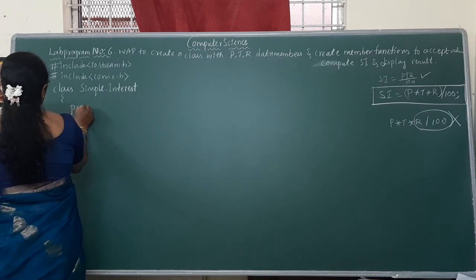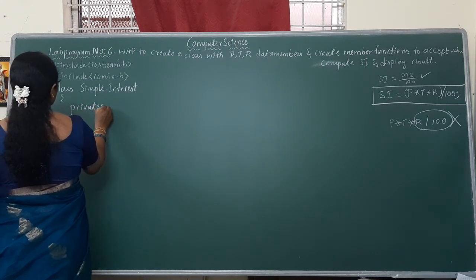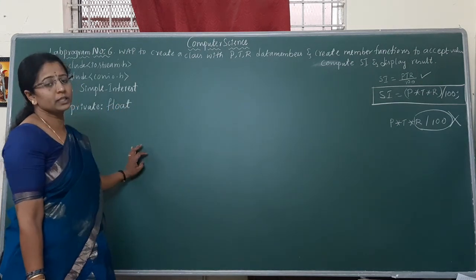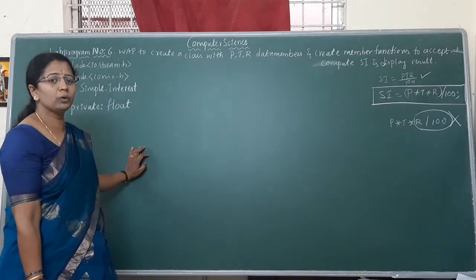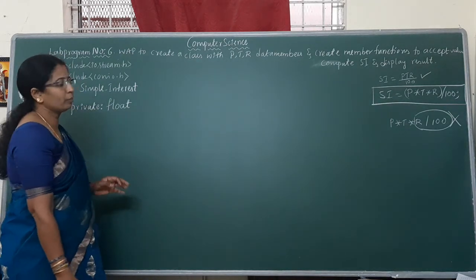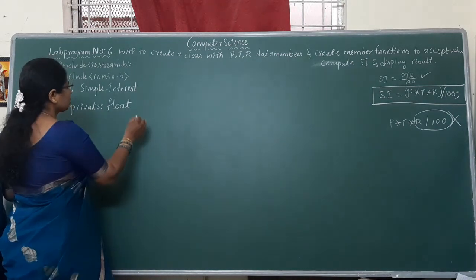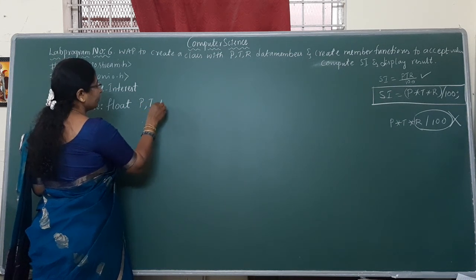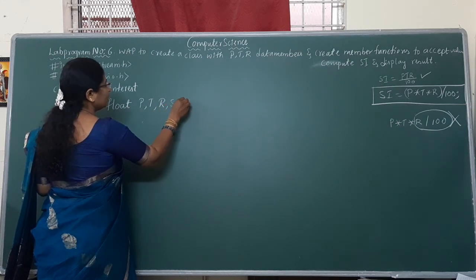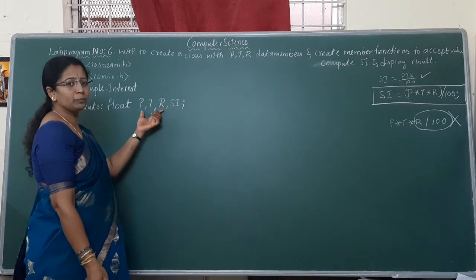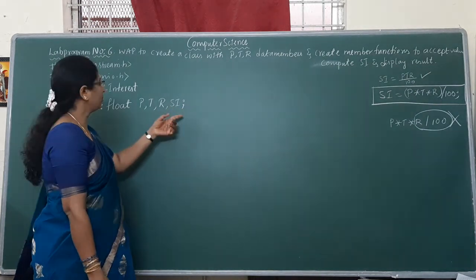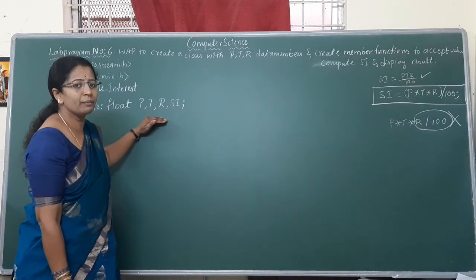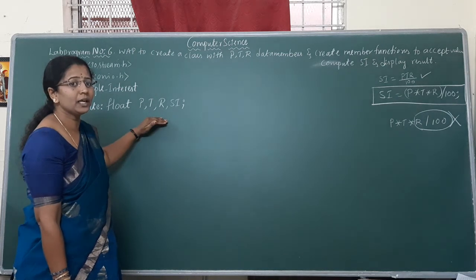Then declare the variables under private or public — any access specifier can be used. Declare the variables as float, because your rate of interest, duration of time, and principal amount may contain fractional values. The variables required are: P for principal amount, T for time, R for rate of interest, and SI for simple interest. P, T, R are input variables; SI is the output variable. Since these are declared inside the class, they are called data members, not just variables.